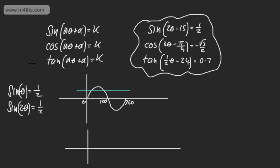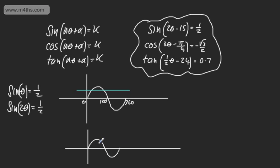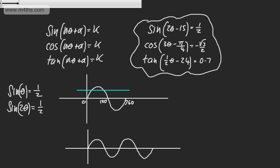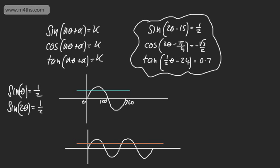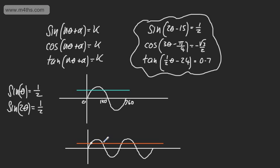The graph transformation from sine theta to sine 2 theta is a one-half scale factor stretch in the x-direction, so the curve completes one full cycle in 180 degrees. For 360 degrees, we'd have double the solutions. If I consider sine of 3 theta, I'd have triple the solutions. For sine of one-half theta, half the solutions. We need to remember we're solving sine of 2 theta equals one-half, not just sine theta equals one-half.